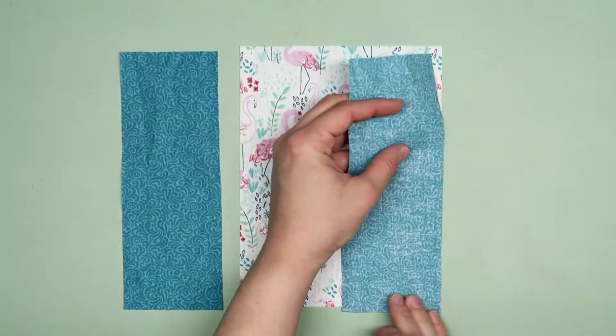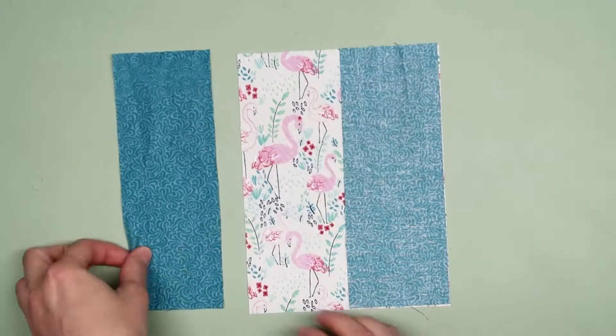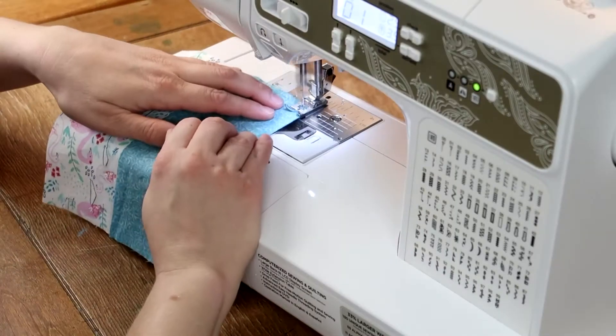To assemble the outer panels take each of the smaller strips, place them on the centerpiece and sew a straight line down each side using a quarter inch seam allowance. Do this for the front and back panels.